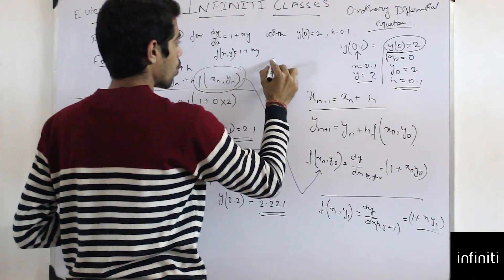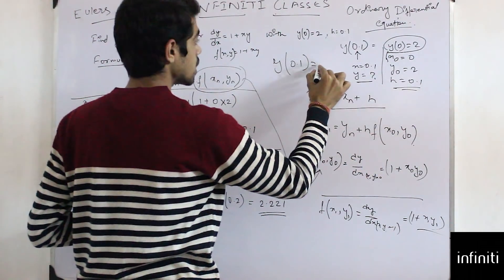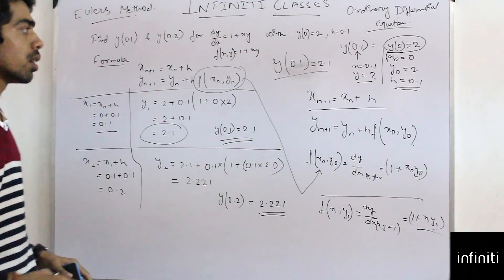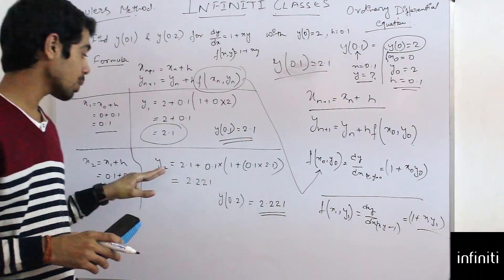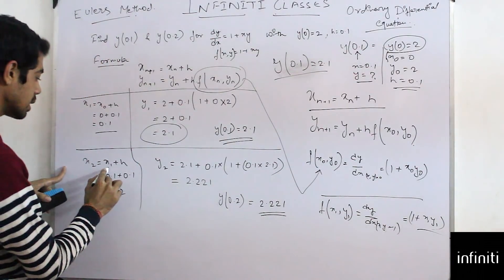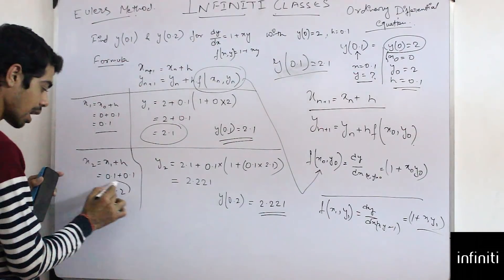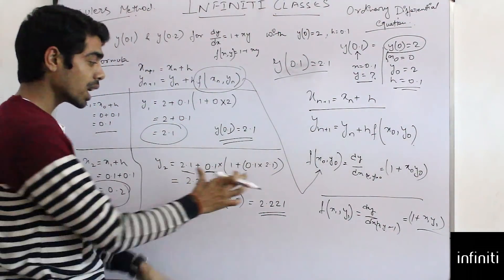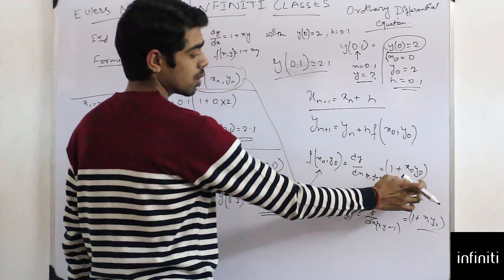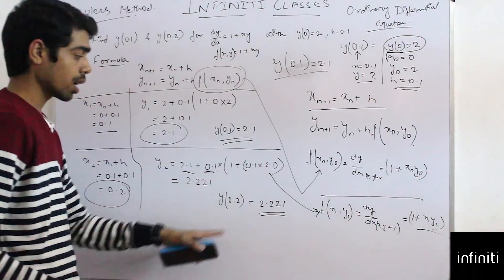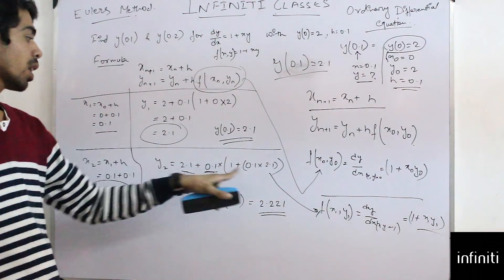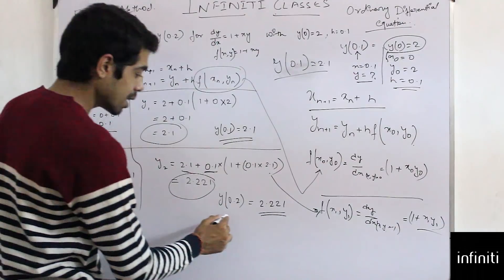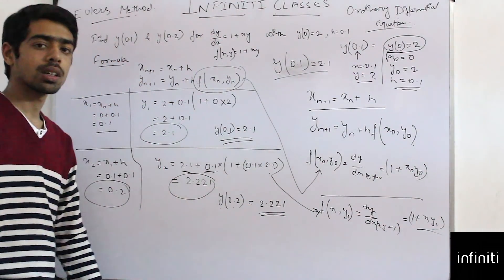So y(0.1) = 2.1. Now for y(0.2): x_2 = x_1 + h = 0.1 + 0.1 = 0.2. For y_2: y_2 = y_1 + h · f(x_1, y_1) = 2.1 + 0.1 × (1 + 0.1 × 2.1). After calculating: y_2 = 2.1 + 0.1 × 1.21 = 2.221. So y(0.2) = 2.221.